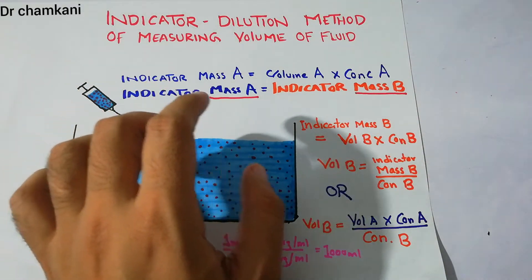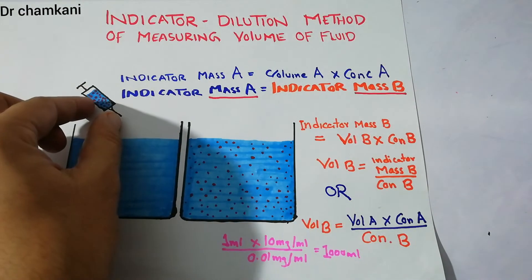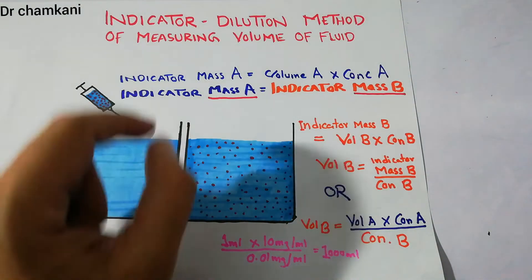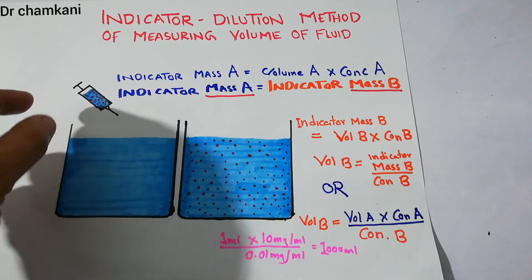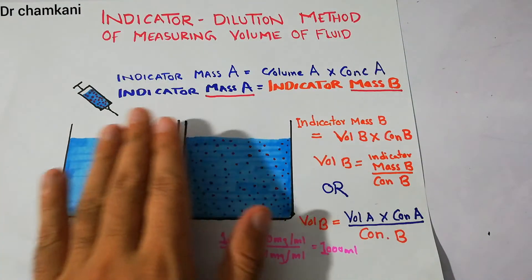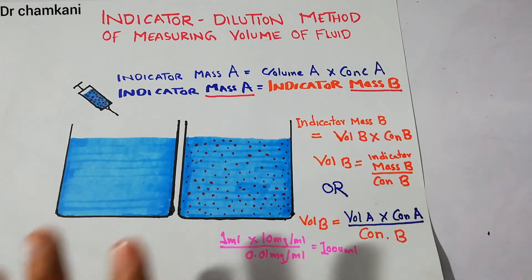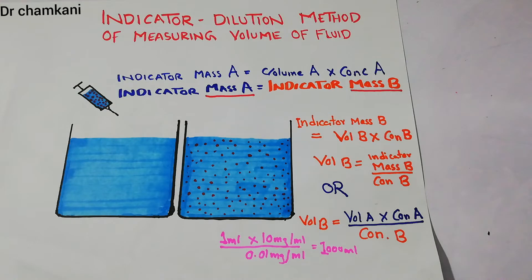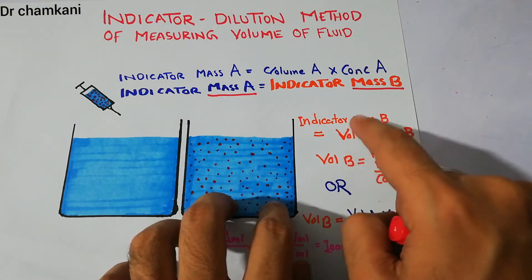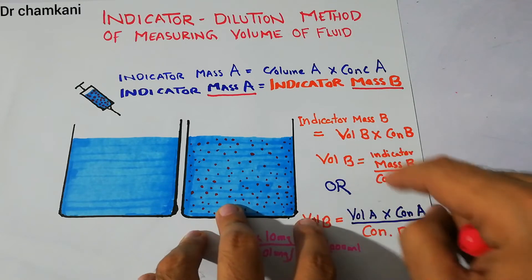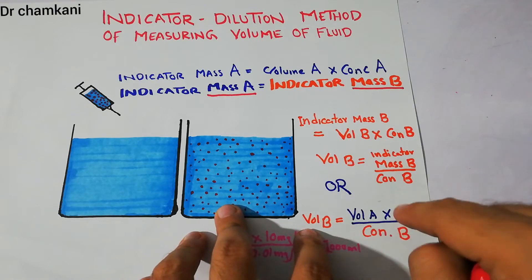The simple rule is the law of conservation of mass: the mass of this indicator before putting it in and after putting it in remains the same. So mass A equals mass B. Its volume distributes over a larger area and its concentration changes. We shuffle the equation and determine volume B by putting those values into the equation.